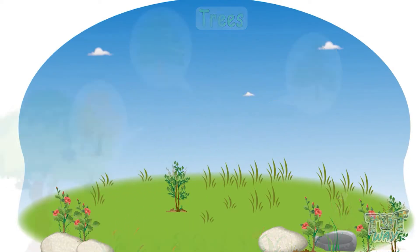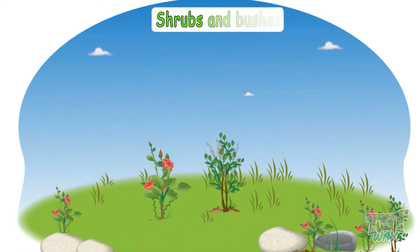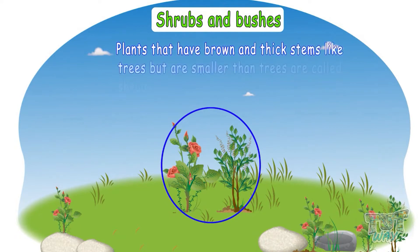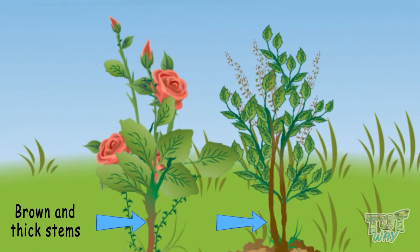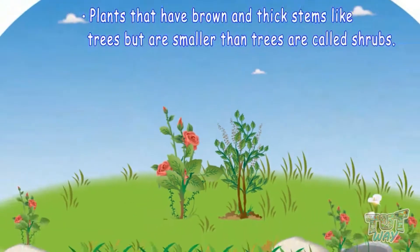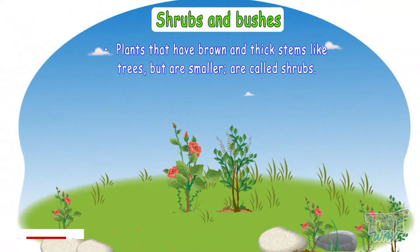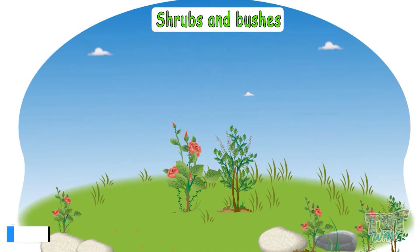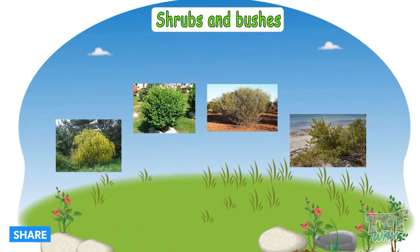Now let's see what are shrubs and bushes. Plants that have brown and thick stems like trees, but are smaller than trees, are called shrubs. They have many branches. Let's see some shrubs.